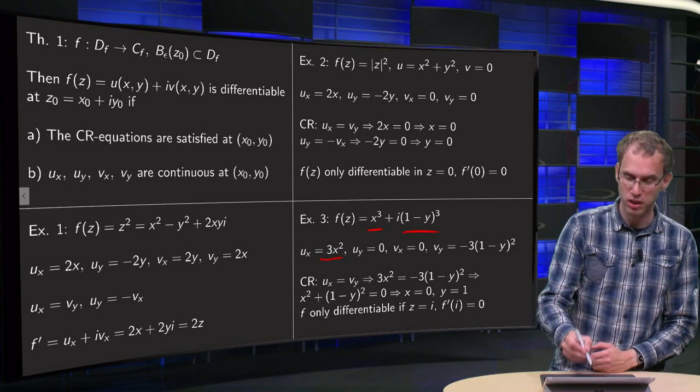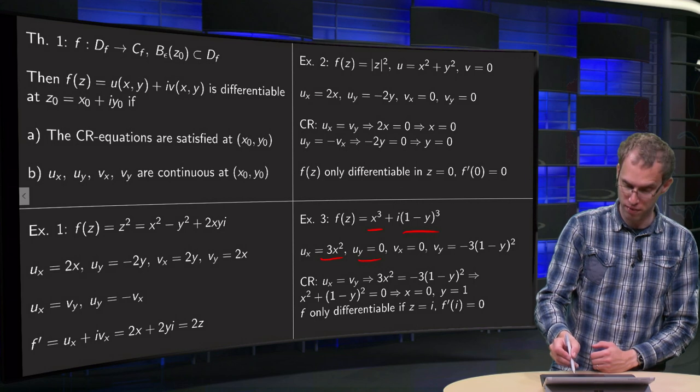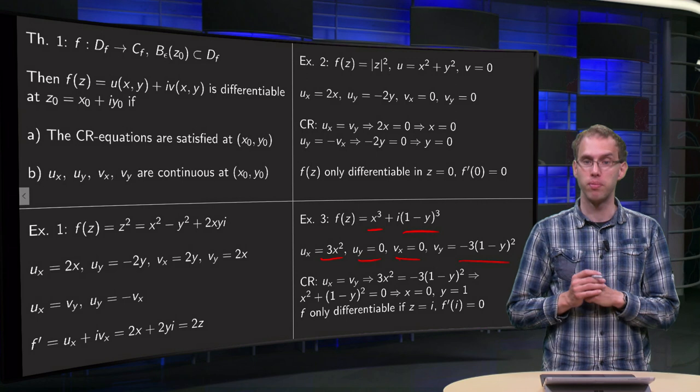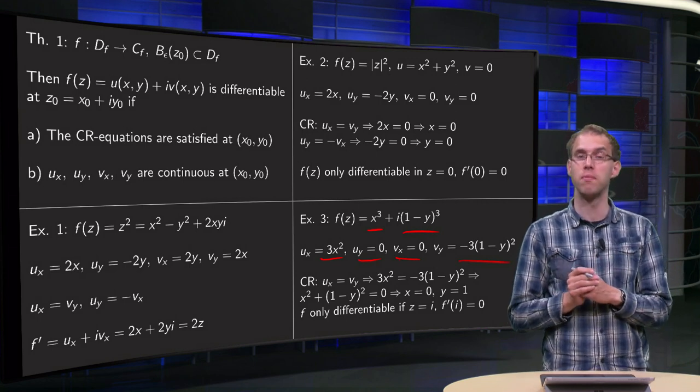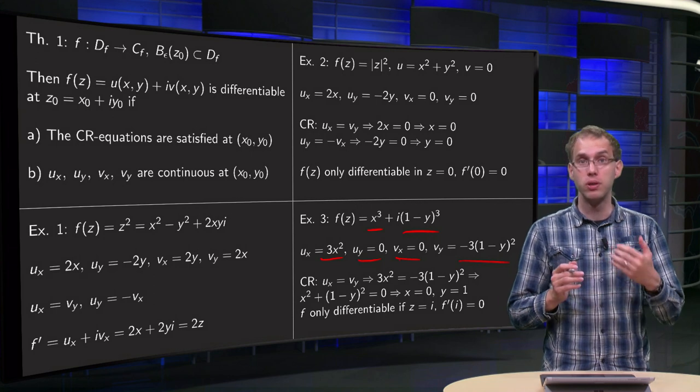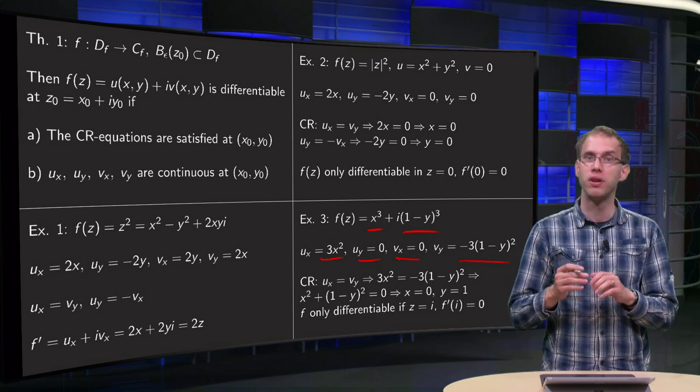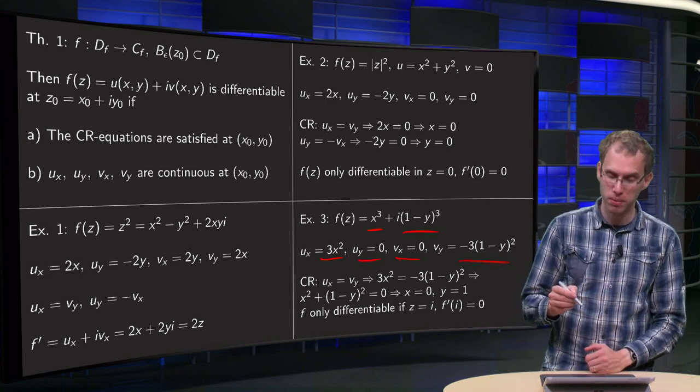We compute again. Then ux equals 3x squared, uy equals 0, vx, v doesn't depend on x, so vx equals 0. And vy equals 3 times (1 minus y) squared times minus 1, so minus 3(1 minus y) squared. Now, ux, etc., they are all nicely differentiable. The second condition is hardly ever the problem. And then let's take a look at Cauchy-Riemann.